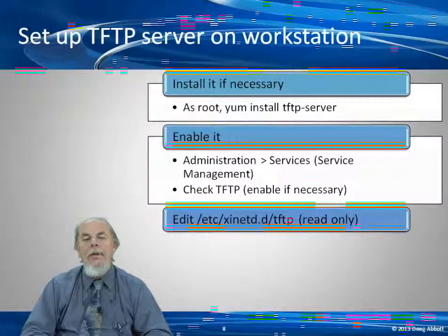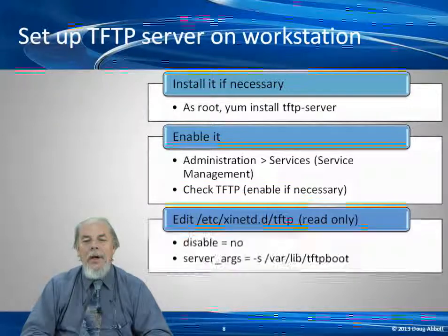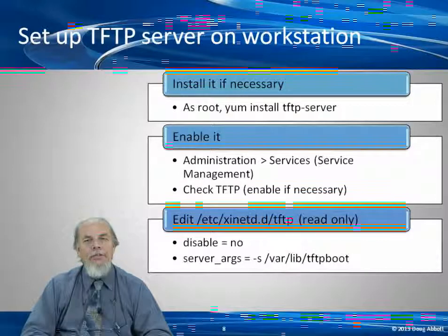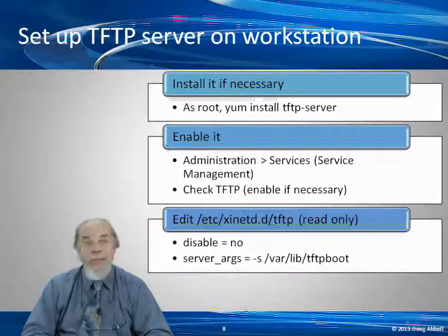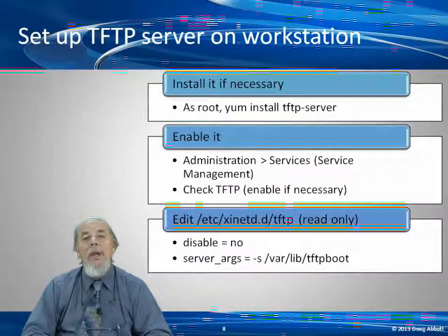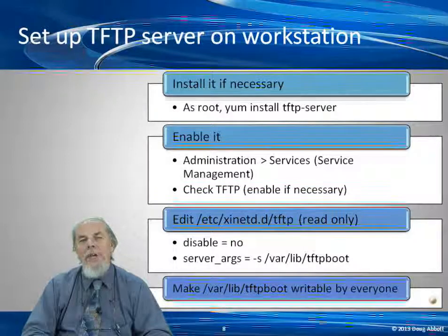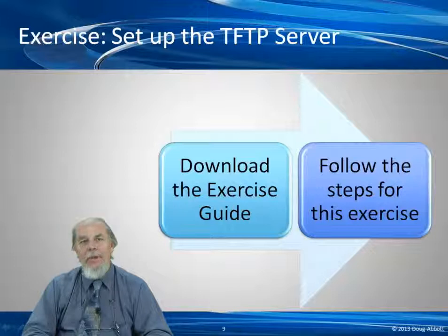You'll need to enable TFTP using the service management dialog. Take a look at the file /etc/xinet.d/tftp. Make sure that 'disable' is set to no, which it should be. Also notice the line that says 'server args' — that identifies the default directory where all TFTP transfers take place, and that's where we're going to move the images we want to download. Make sure that /var/lib/tftp/boot is writable by all users. Go ahead and get TFTP set up.